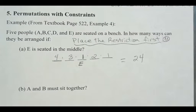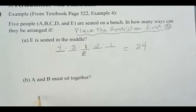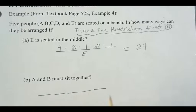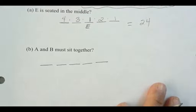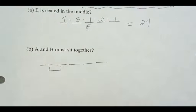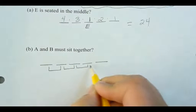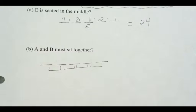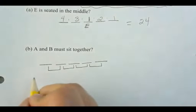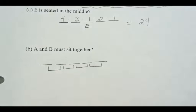Now, person A and B are best friends — they're dating and have to sit together. There are still five seats available, but A and B must sit next to each other. We treat them as occupying two adjacent seats, effectively one unit. So we need to find how many adjacent positions are available for that pair. There are four places where A and B can sit together.